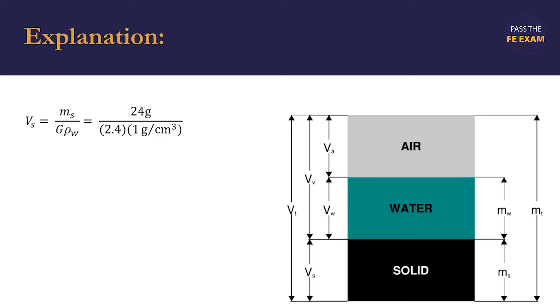We know the specific gravity of the soil sample is 2.4, and the density of water is 1 gram per cubic centimeter. This can be referenced in the FE handbook if you forget this value. Solving for V sub S gives us 10 cubic centimeters for the volume of the solids.